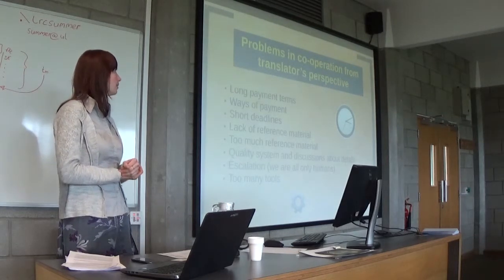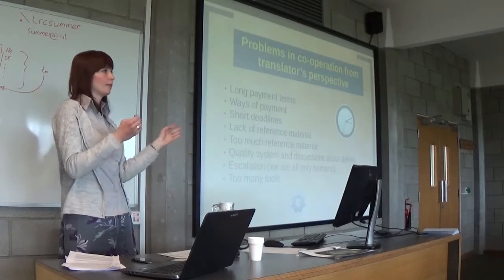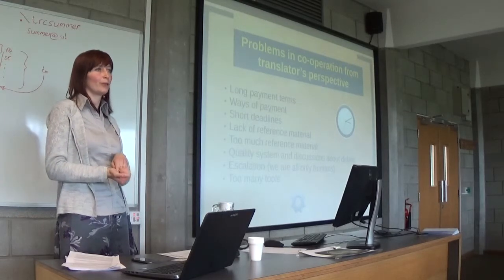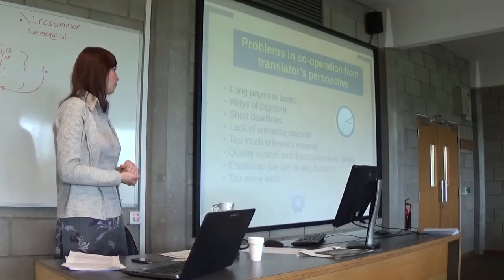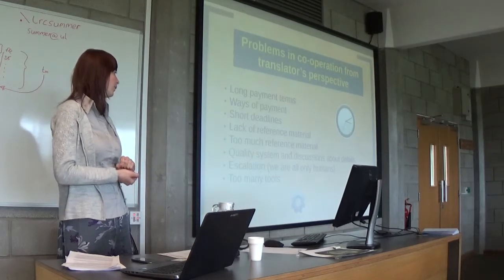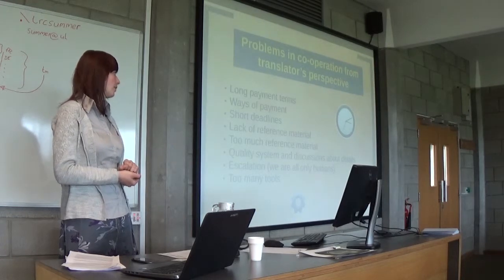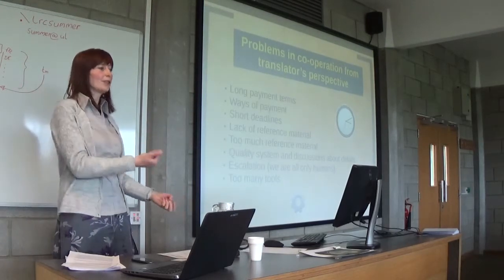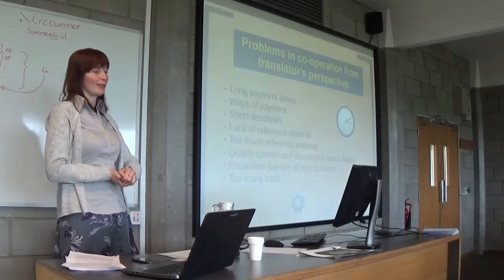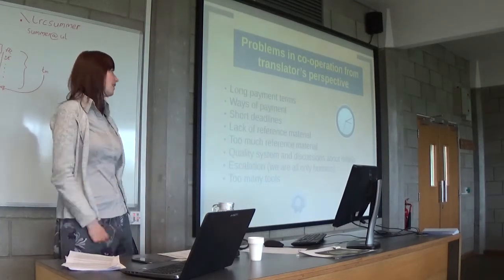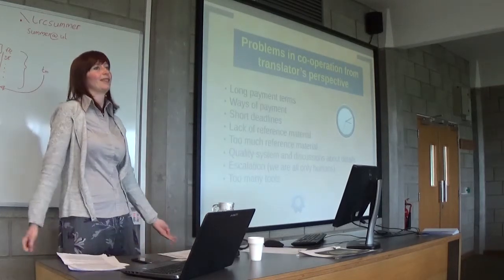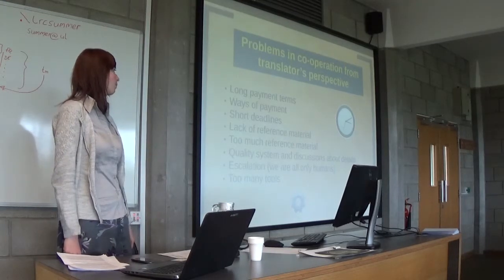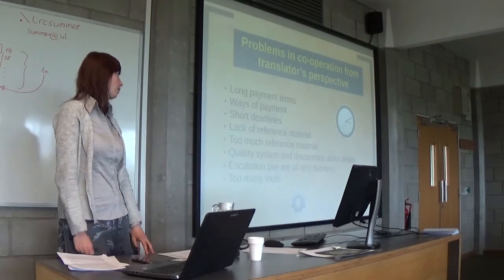Companies should find a golden mean and give you as much information as needed, but not too much. The quality system is also something translators often dislike because they have to fill in various questionnaires about what was wrong or what steps they could take to improve. Discussions about details are another pain point — a translator may receive feedback that something was wrong, disagree, and then a discussion starts about who is right, which can take ages with nobody knowing the correct translation of a certain term.